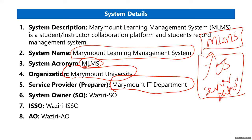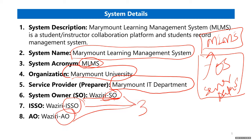For this demo I am wearing multiple hats. In a real scenario these would be different individuals. I am the System Owner, the Information System Security Officer, and the Authorizing Official — three personas, just for the purposes of this class exercise.